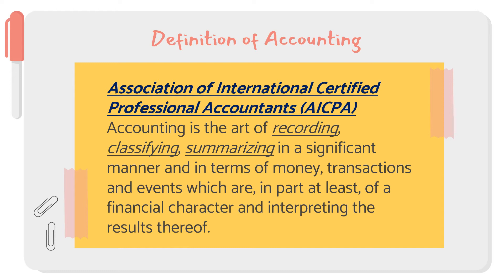From that definition and the previous definitions from AAA and ASC, you can identify that they are almost the same — there is a certain process or things that are recorded, and the result is to interpret those results for making economic decisions. So from AICPA, let's look at the meaning of recording, classifying, and summarizing.